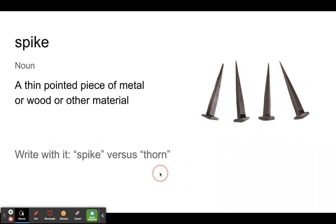Last one is spike. A thin pointed piece of metal or wood or other material. You can see these spikes sticking up here. Very sharp, very pointed, very long. If you're writing with it, there's spike and there's a similar word thorn.